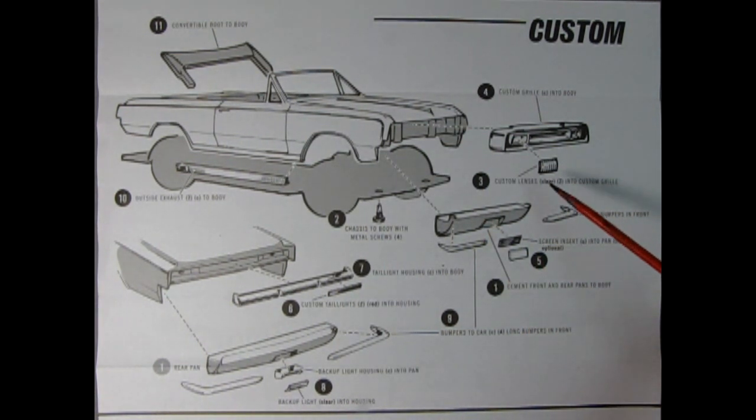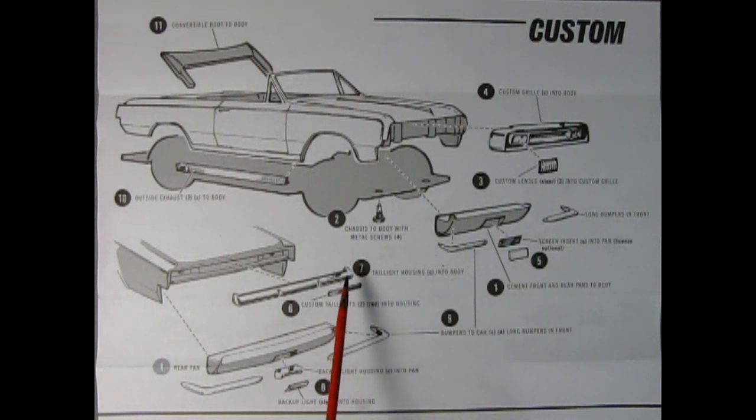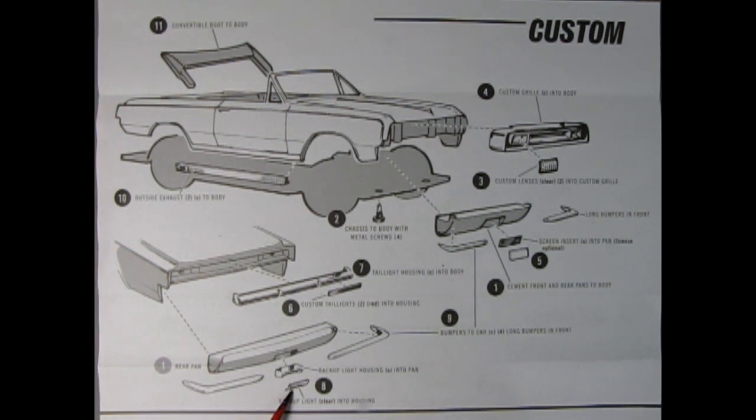Then you want to add on your custom lenses to the custom grille and glue that up in the front. Next up is to add in the screen insert to the front of the car, or your choice of the license plate instead. Then you're going to take your custom tail lights and glue it into the tail light housing, and then glue the tail light housing up onto the body.